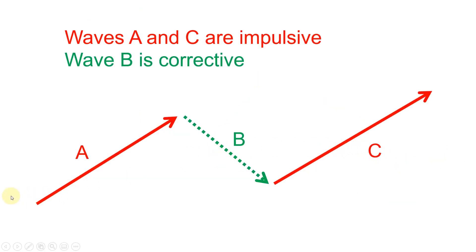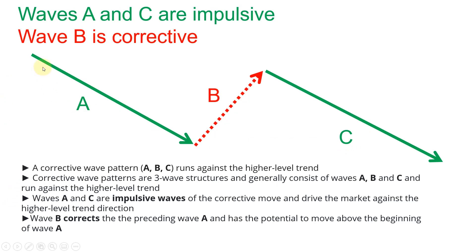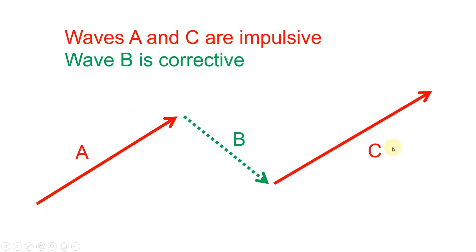You can also get this the other way around. When the higher-level trend is going down — so you have a one, two, three, four, five move going down — then the corrective wave pattern ABC moves against that higher-level trend to the upside: wave A going up, wave B correcting wave A to the downside, and wave C moving higher.